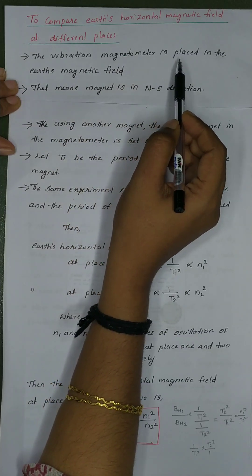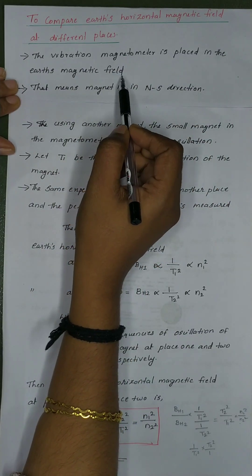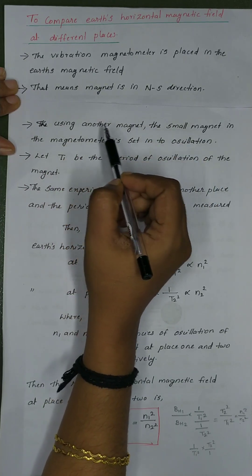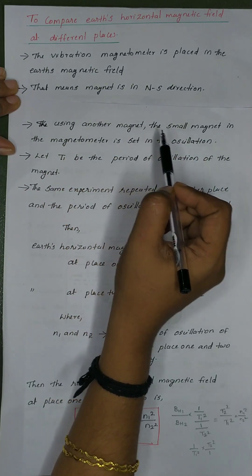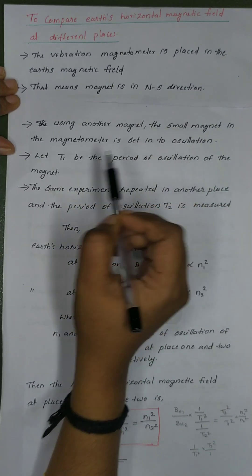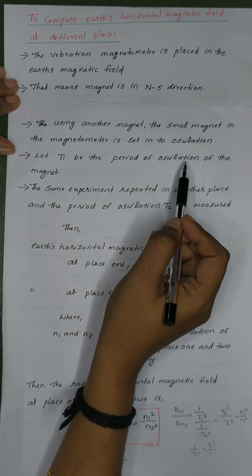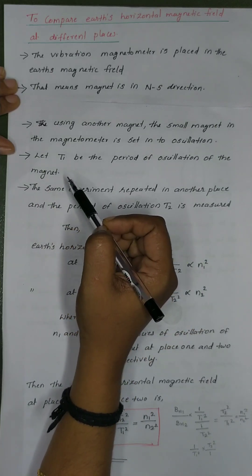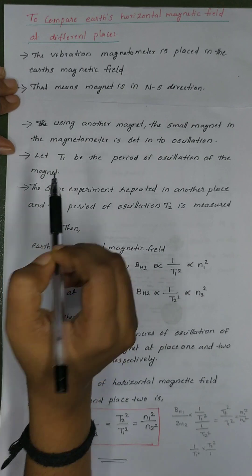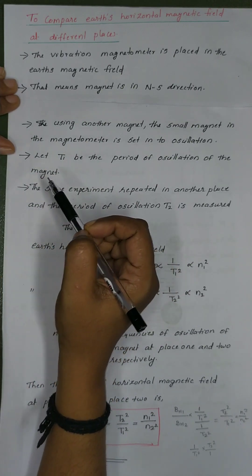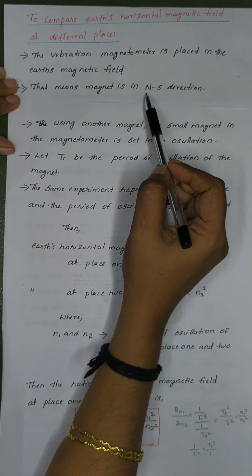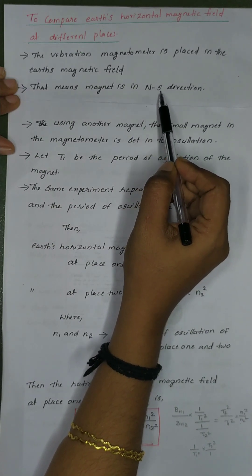The vibration magnetometer is placed in the Earth's magnetic field, with the magnet aligned in the north-south direction. Using another magnet, the small magnetometer is set into oscillation. The small magnet will align itself in the north-south direction under the Earth's horizontal magnetic field.